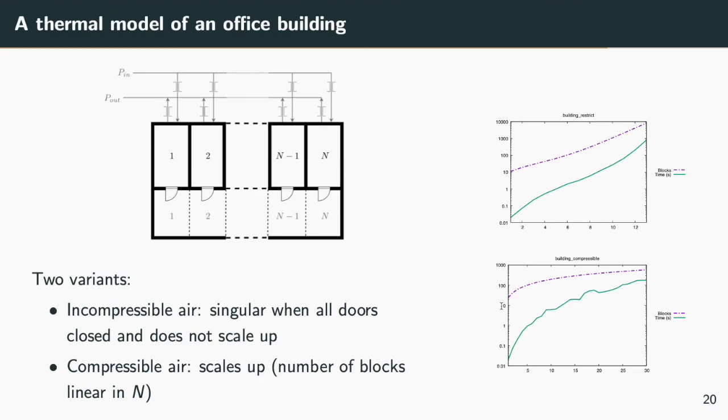The second model, with compressible air, behaves well with our method. The reason is that blocks of equations are bounded. Thanks to this, the number of blocks is linear in n. You can find more details in the paper and in a companion research paper.